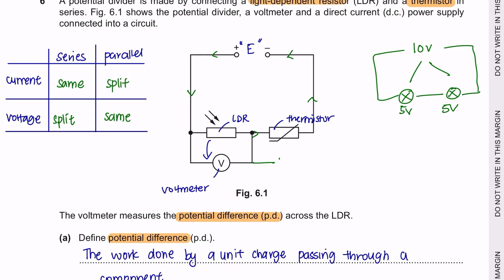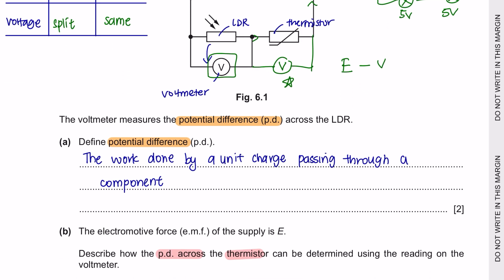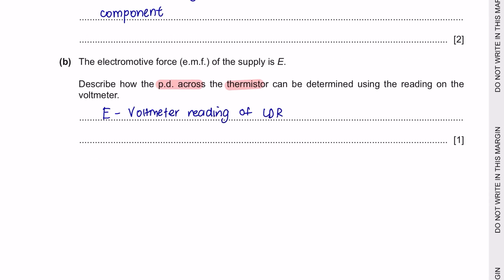In order to find the voltage of the thermistor, we're going to take the total voltage, which is E, and minus the voltage of the LDR in order to get the voltage of the thermistor. So E take away the voltmeter reading of the LDR will give us the potential difference across the thermistor.